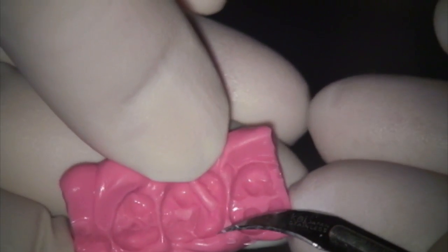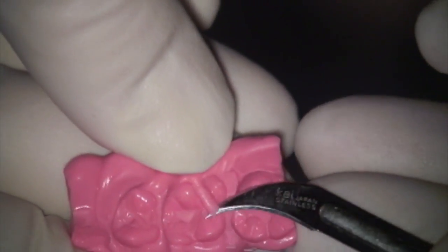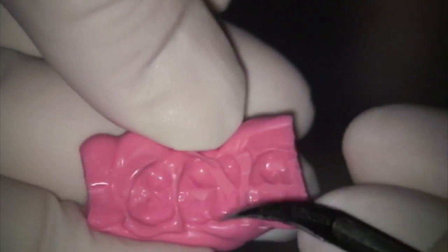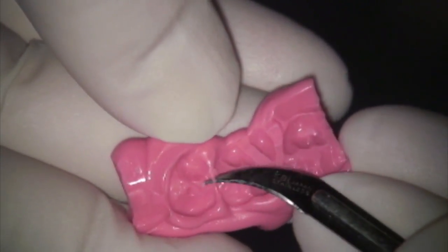I have another DVD on mounting and evaluating study models on the articulator. That DVD will show you exactly how we trim the bite records. I filmed that in the microscope so you could get a really close-up view of how I'm trimming the bite records and then actually mounting the case, taking the face bow, adding the face bow to the SAM 3 articulator, then mounting the case. The techniques I'm showing you, you don't need to have a SAM 3 articulator. You can use any articulator. It's the concept and the overall technique that you want to look at.